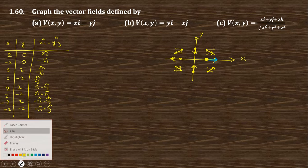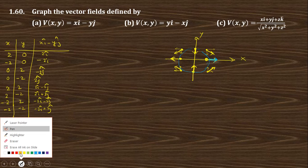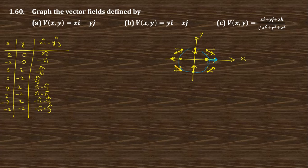So you can see that at a particular radius — when the radius is constant — the nature of the vector field will be like that. The resultant changes around the circle like that, similarly like that. At a certain distance, the pattern repeats around the circle.